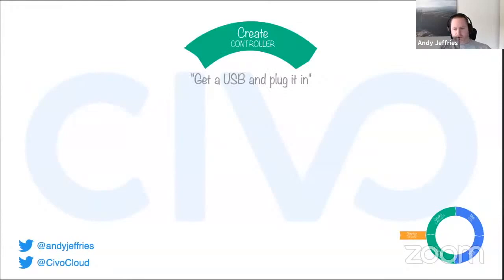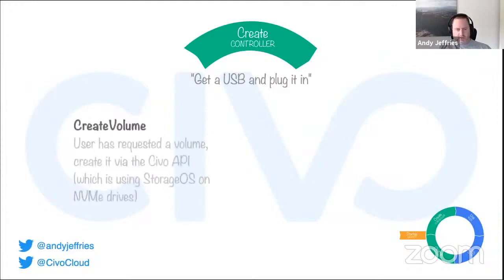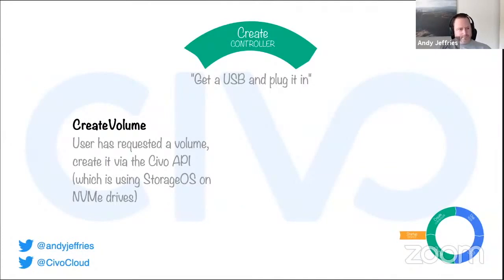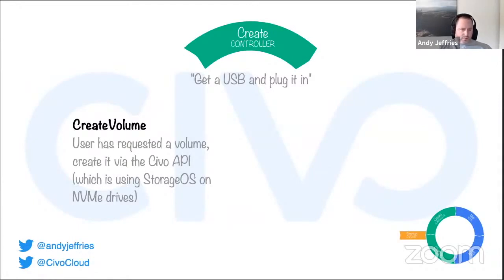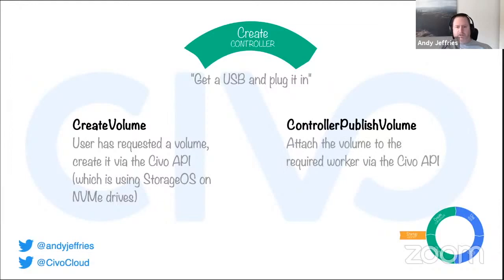Into the create phase — getting a USB drive and plugging it in. There are two methods. The first is create volume: when someone initially creates a PVC and tries to attach it to a pod, it realizes there's no underlying volume. At this point it calls the Civo API — in our case using StorageOS on NVMe drives — and creates the volume in the storage layer. We actually create a Civo volume here, with a custom Kubernetes operator handling the cluster-level stuff. The second method is controller publish volume, the equivalent of plugging the USB drive in — we talk to KubeVirt and say: mount this volume onto this node.